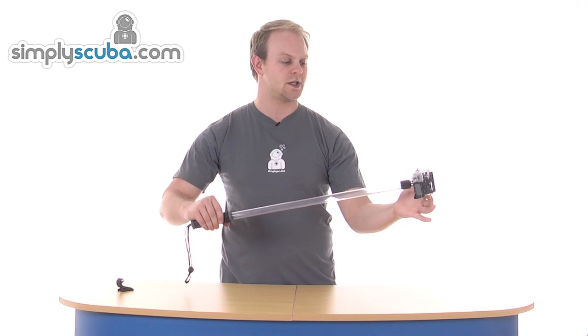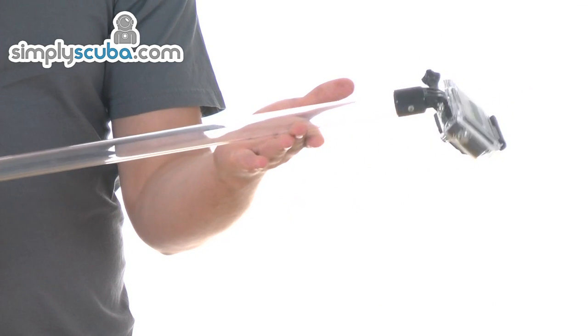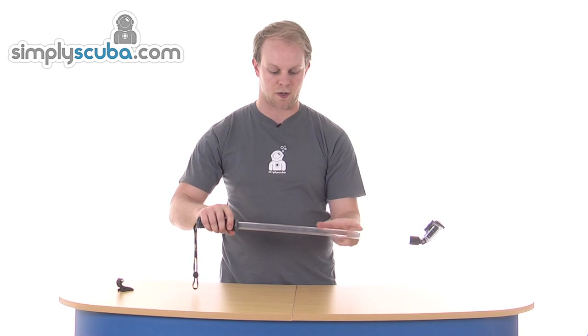And it's just nice because you can turn it complete 360 degree angle all the way around. Like I said, the pole is transparent so it won't pick up on the camera itself. So great design there from GoPro. Please take a look at simplyscuba.com.